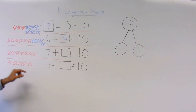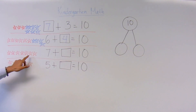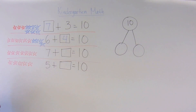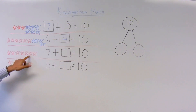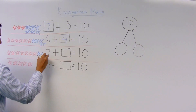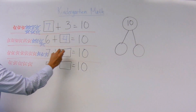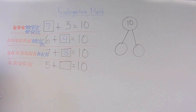Now let's take a look at the next example. I have 7 plus something equals 10. So I drew 7 stars: 1, 2, 3, 4, 5, 6, 7. That's correct. And we're going to count up: 8, 9, 10. How many blue stars do I have? 1, 2, 3. So I'm going to draw 3 right there.